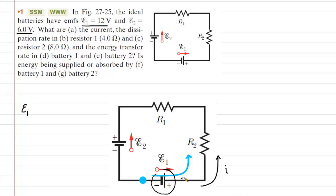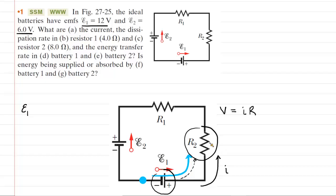Continuing counterclockwise, the next element we encounter is resistor R2. The potential change across a resistor equals the current through that resistor multiplied by its resistance value. We are moving through R2 in the same direction as the current, and when you move in the same direction as the current through a resistor, the potential change is negative. So we write minus I times R2.